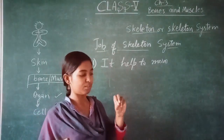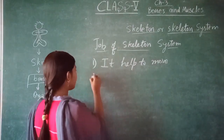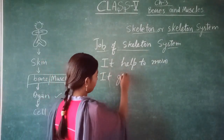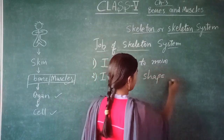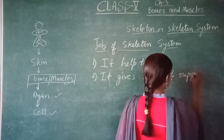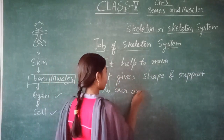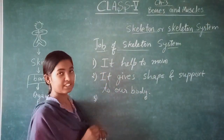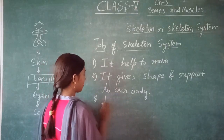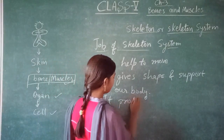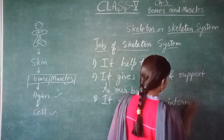If we need to move our hand, we need to pick something — these are the bones which help us to pick something, holding and helping us. Second, it gives shape and support to our body. And the third job of this skeleton system is that it covers and protects the internal organs of the body.